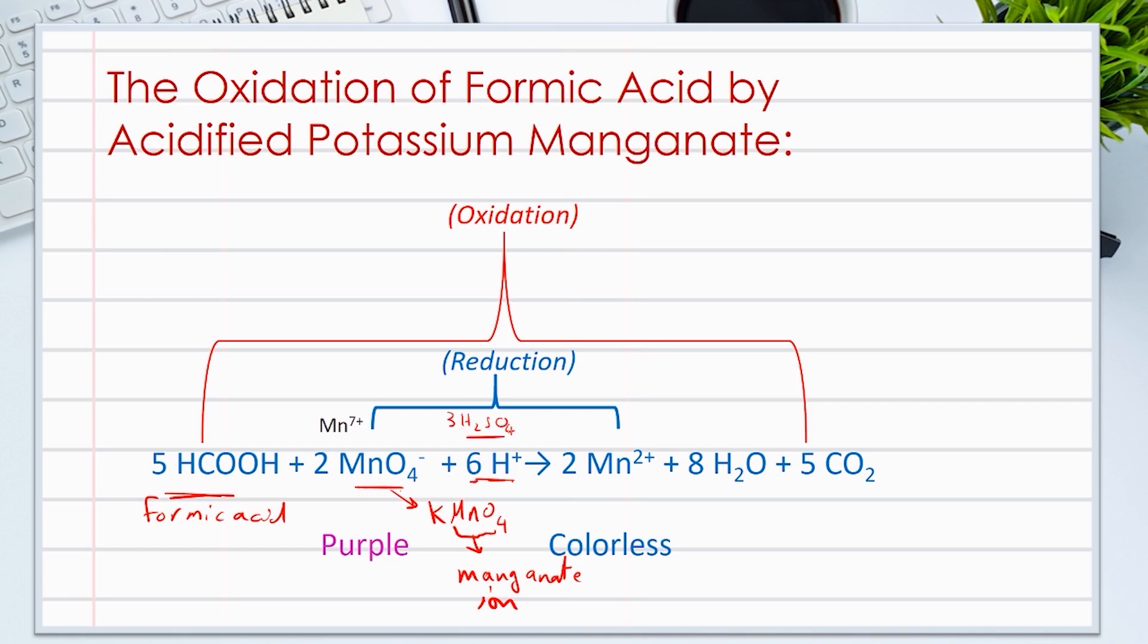The result is the formation of magnesium sulfate MnSO4. Here we only show the manganeseous ion Mn2+, and water H2O, and the carbon dioxide CO2. The reaction can be detected by the change of the purple color of permanganate ion to colorless manganeseous ion.